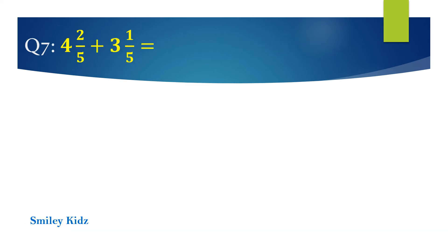Question number 7: 4 and 2 by 5 plus 3 and 1 by 5 equals dash. Your time starts now. And your time is up.